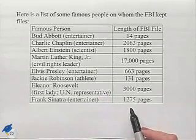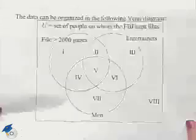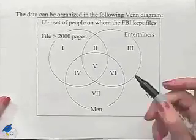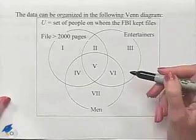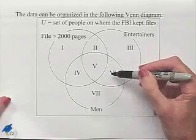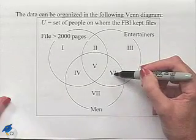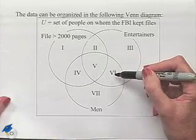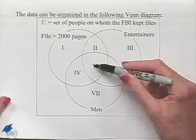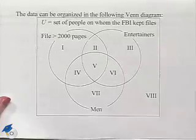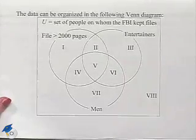Finally, Frank Sinatra. Frank Sinatra was an entertainer, he was a man, and his file was less than 2,000 pages. He was an entertainer and a man, so he's in either region five or six. His file was less than 2,000 pages, so therefore he will be in region six.